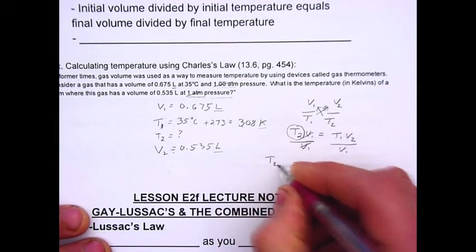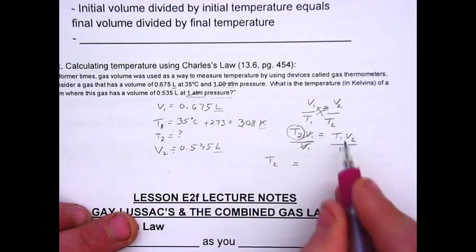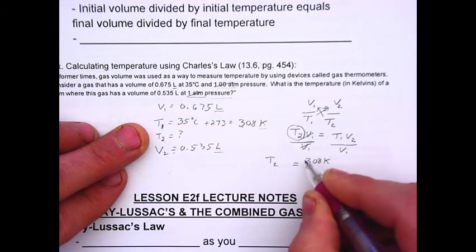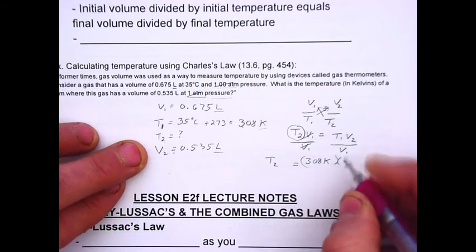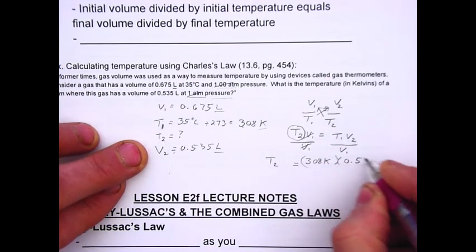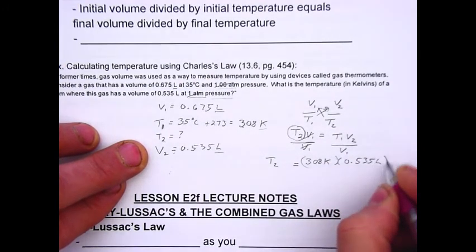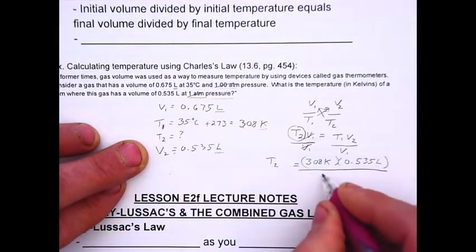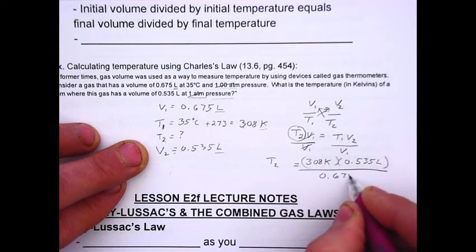Now, I plug in the numbers over here in their appropriate places. T1 is 308 Kelvin. V2 is 0.535 liters. And V1 is 0.675 liters.